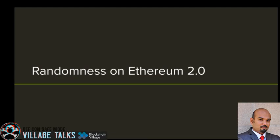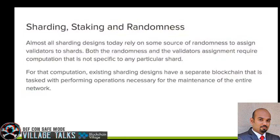Researching randomness in Ethereum 2.0: randomness is crucial to the overall engineering and design of Ethereum 2.0. Looking at current implementations — Near Protocol, Prysmatic Labs, the beacon chain — there is a crucial role for randomness because all sharding designs today rely on some sort of randomness to assign validators to shards.